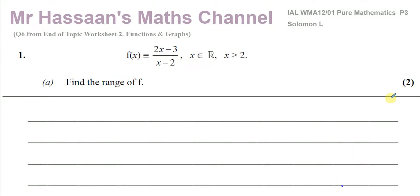Welcome back to Mr. Hassan's Maths Channel. I am now answering question number 1 from the Solomon L C3 collection, which is also question number 6 from my end-of-topic worksheet on functions and graphs from my P3 collection. Question 1, part A asks us to find the range of the function f, defined as (2x − 3)/(x − 2), where x is an element of the real numbers and x is greater than 2.